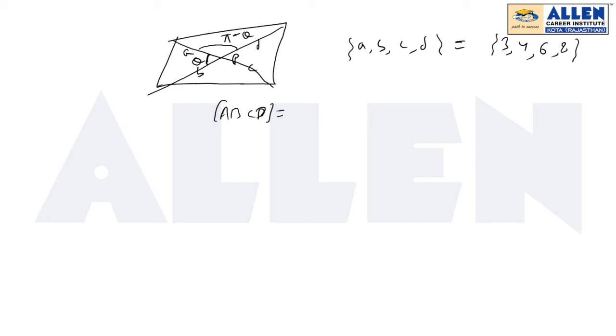Half AB sine theta plus AD sine theta plus DC sine theta plus BC sine theta. So half sine theta will be taken common and we'll have AB plus AD plus DC plus BC. Which means we need to add them AB plus BC plus CD plus DA in the cyclic order.